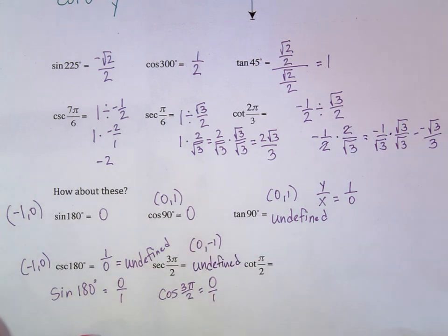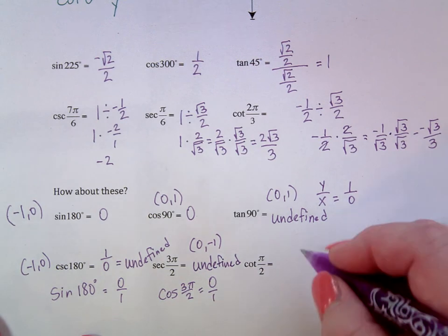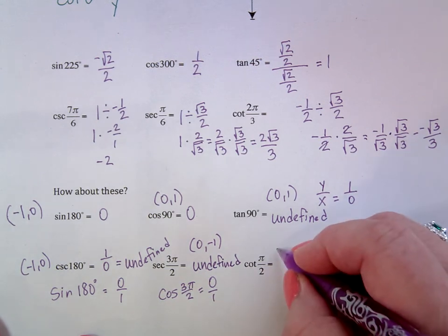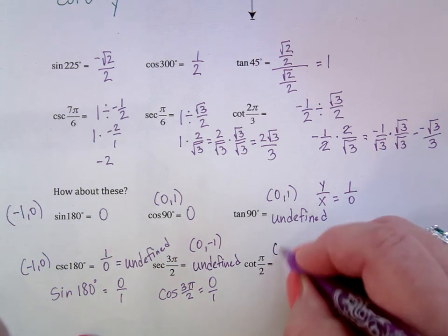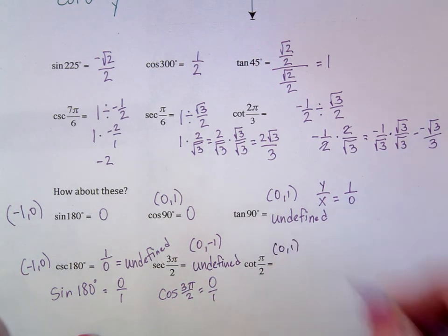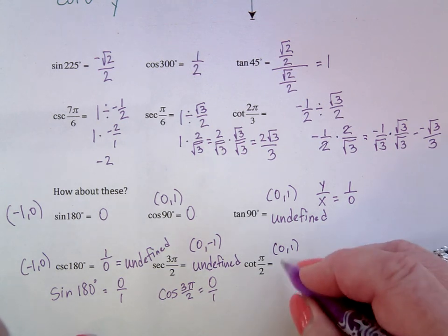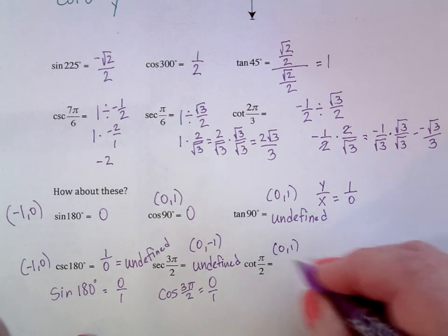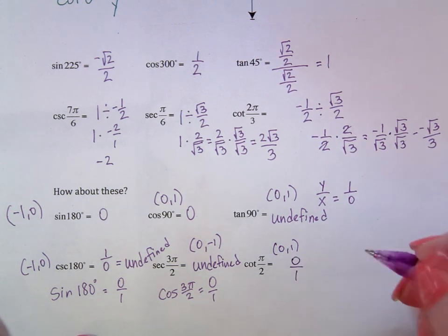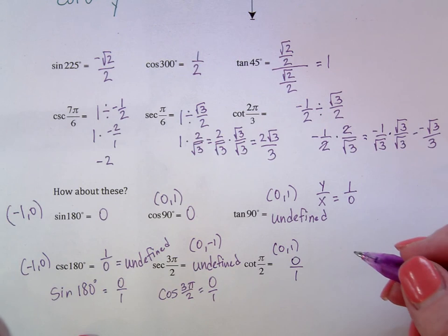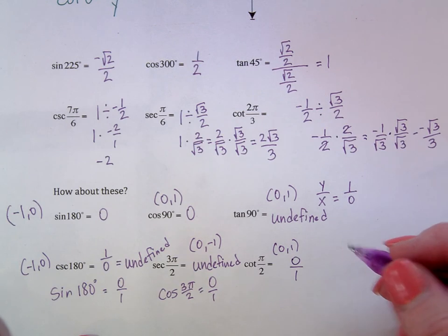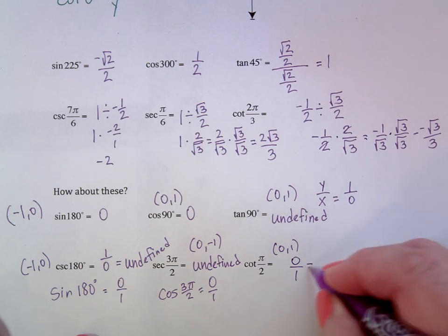For cotangent of π over 2: the coordinate is (0, 1). Cotangent is x divided by y, so that's 0 over 1 — which is just 0. Zero in the numerator is allowed, so this one is defined and equals 0.